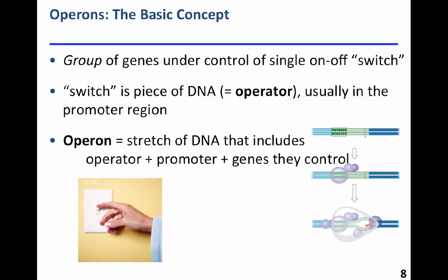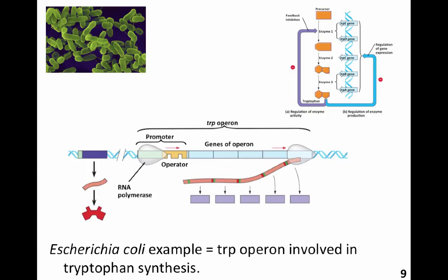The switch is a piece of DNA called the operator, which is usually in the promoter region — the region that signals the starting point for transcribing a gene. The operon itself is a stretch of DNA that includes the operator as the on-off switch, the promoter region, and all of the genes under its control. Let's look at an example from Escherichia coli: the famous tryptophan operon.